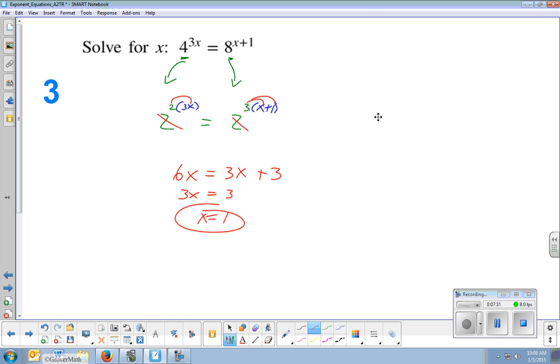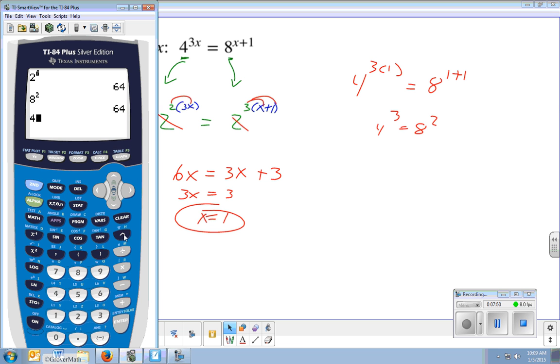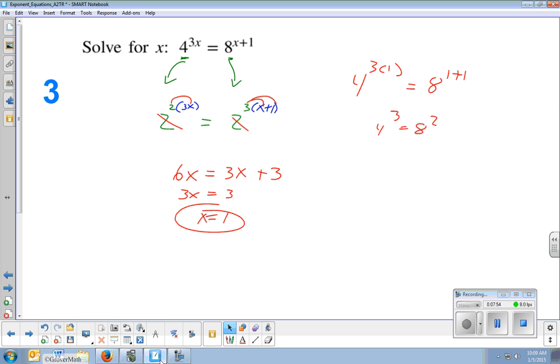But let me definitely check it. So that would be 4 to the 3 times 1, which is 3, and 8 to the 1 plus 1 is 2. So that is 4 cubed, the same as 8 squared. Well, I know 8 squared is 64. Is 4 cubed 64? Maybe you know it. Maybe you don't. But it is. And so that does work out.